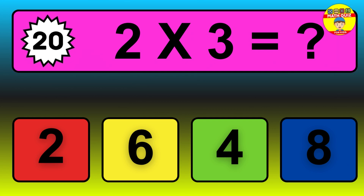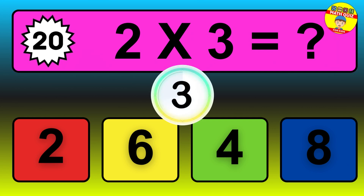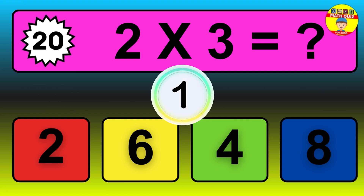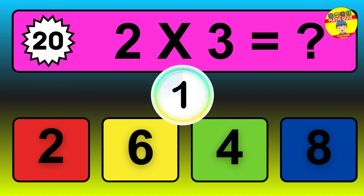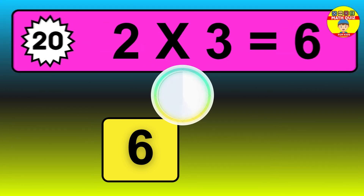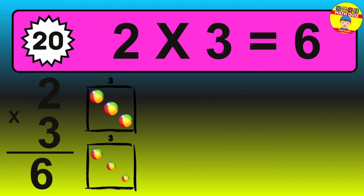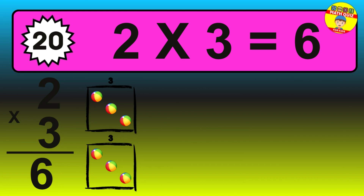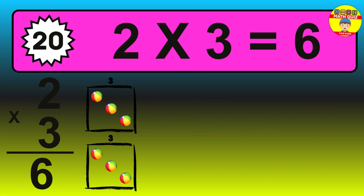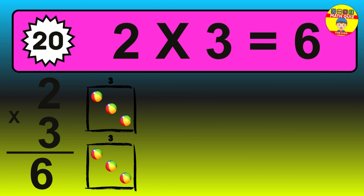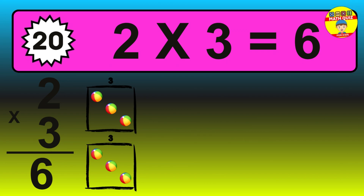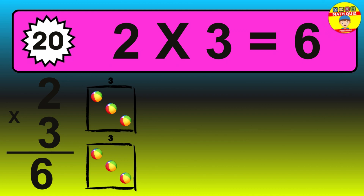Question 20. 2 times 3 equals what? The answer is 6 balls. 2 times 3 is 6.